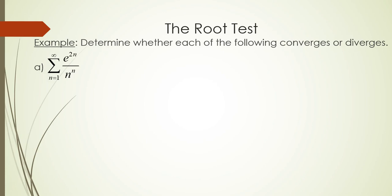In our first example, we'll determine whether the series converges or diverges. We're given the series from n equals 1 to infinity of e to the 2n over n to the n power. Notice that the variable n is in the exponents of both the base e and the base n, so we have n in the power.